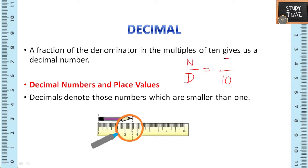For example, if it is 5 divided by 10, then we can write this number as 0.5. Decimal numbers and place values: decimals denote those numbers which are smaller than 1. Here you can see in the scale between 3 and 4, the in-between lines are called decimal point. So the first one is 3.1, 3.2, 3.3, 3.4, this bigger one is 3.5, then you can expect 3.6, 3.7.